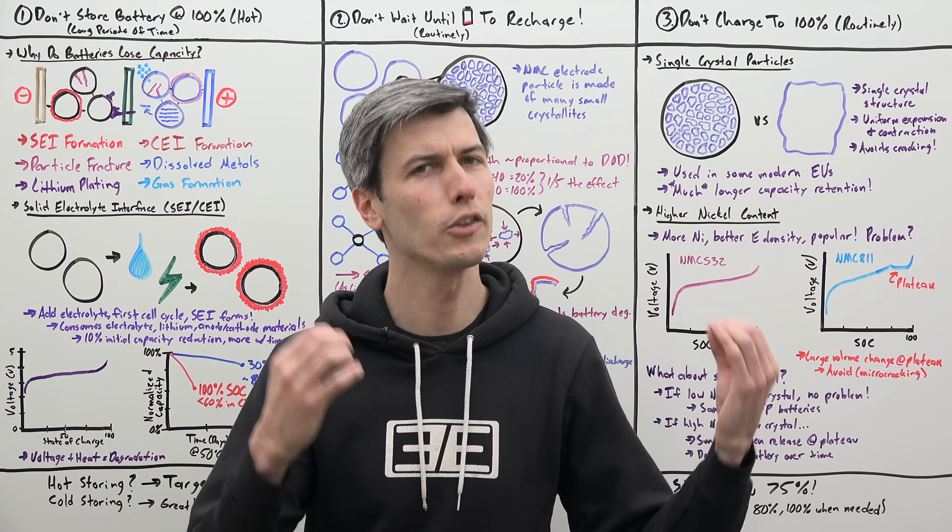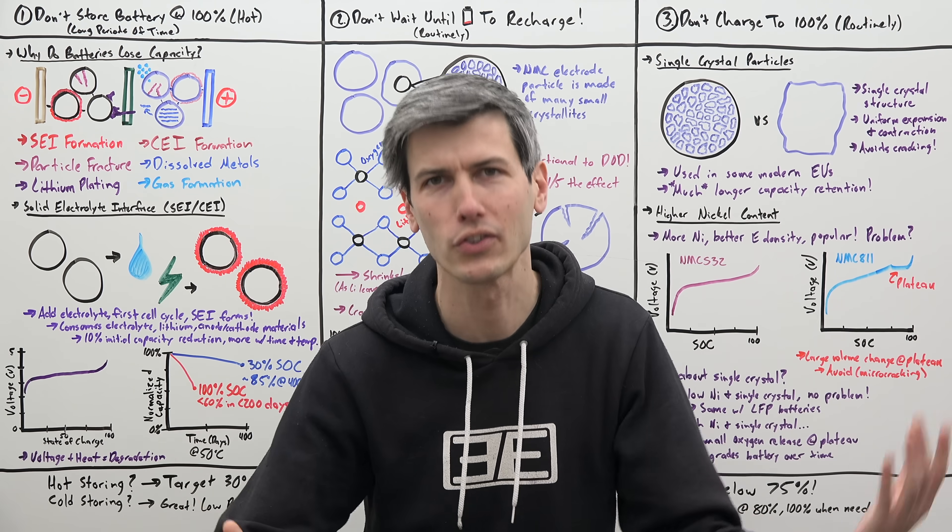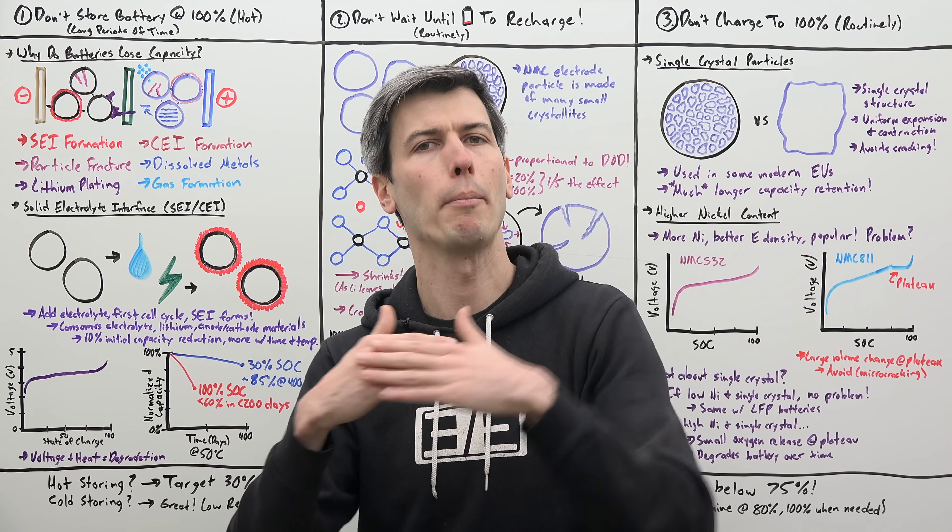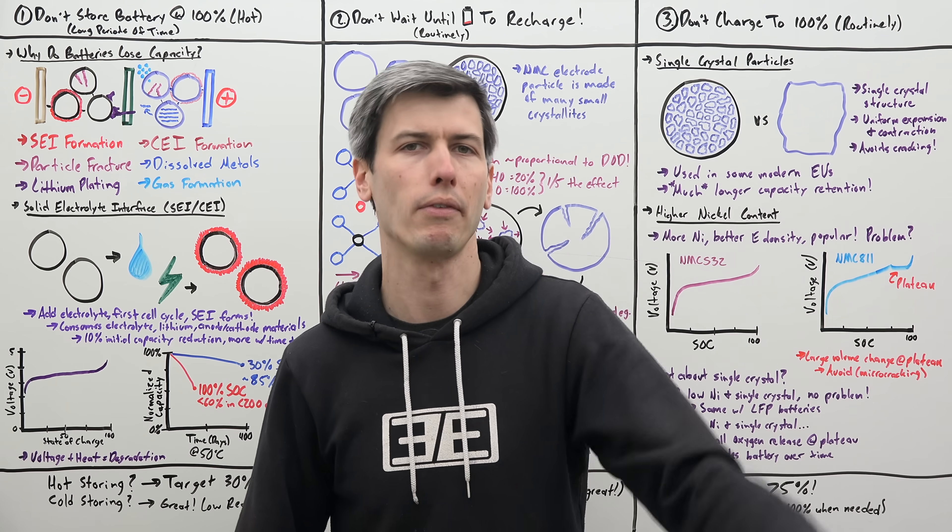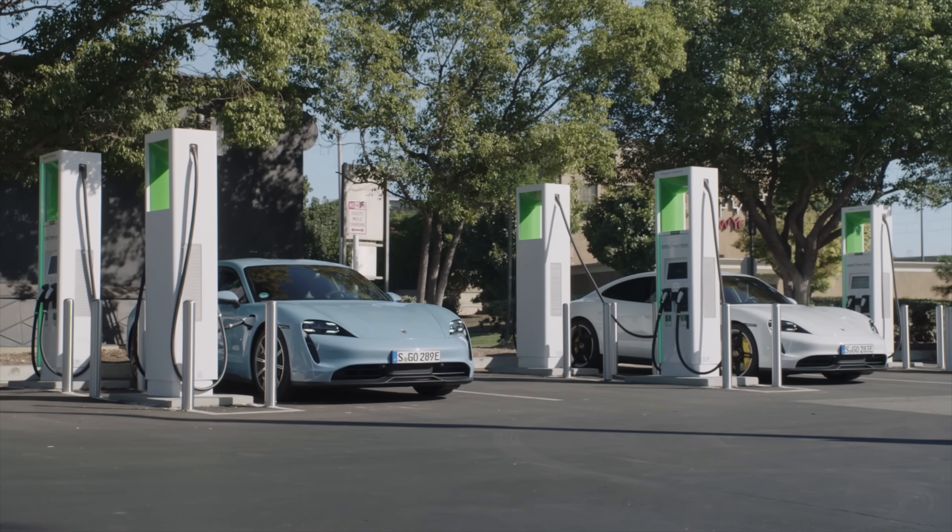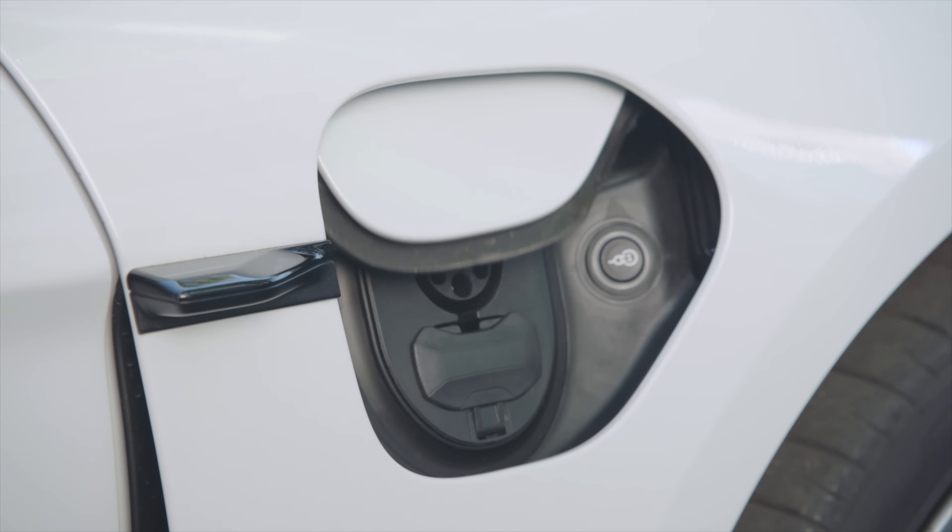I also want to make sure that it's clear that these best practices are so that you ensure your battery lasts a very long time, hundreds of thousands of miles, so that you don't have to worry about battery degradation for the life of the vehicle. Even if you do everything wrong, it'll still very likely last a very long time. Hence, EVs tend to have long battery warranties.